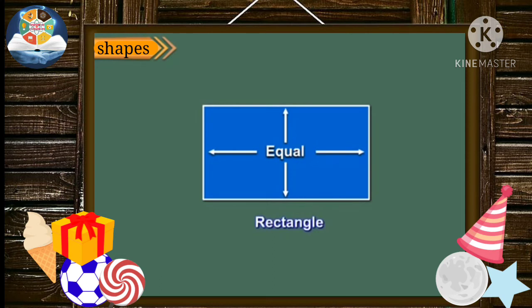Students, do you know any shape made of curve lines? Yes. We have shapes made of curve line also. Look at this shape. It is made of close curves. It has no corner and this is called a circle.